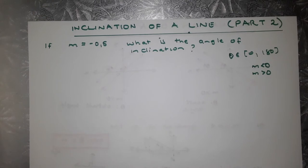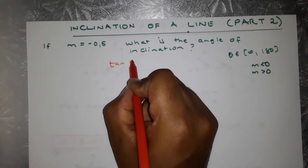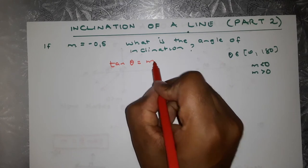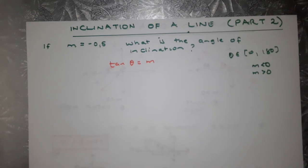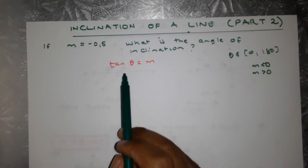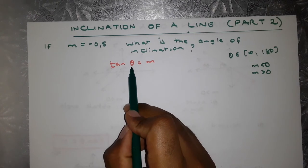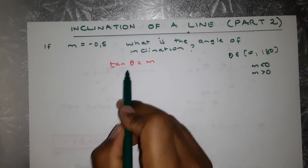Our key equation is: the tangent of theta equals the gradient. In a test, you might see the tangent of alpha or the tangent of beta — don't be alarmed. This theta is just a variable, so it can be the tangent of theta, the tangent of A, or whatever is written. The equation is the same.